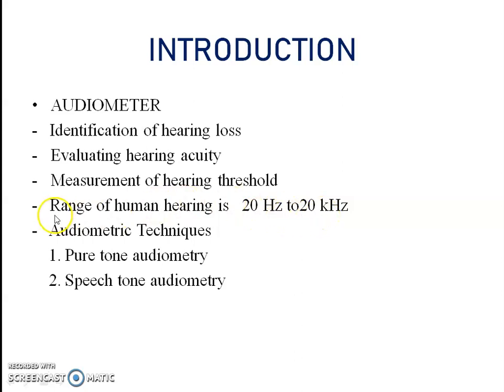There are two types of audiometric techniques: pure tone audiometer and speech tone audiometer. Pure tone audiometer is used to obtain air conduction and bone conduction threshold of hearing, which is helpful in diagnosis of hearing loss. Speech audiometer is normally used to determine speech reception thresholds for diagnostic purposes.